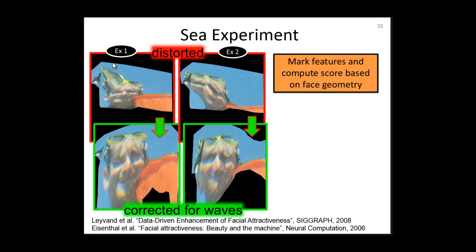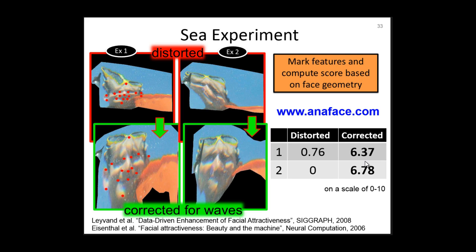Here are two results. Notice how the water mask is corrected here. You can judge by yourself which one is better looking. There are algorithms that can give you a beauty score based on the geometry of your face. There is also a website called Anaface where you can upload your image and get an attractiveness score based on face geometry by marking centered metric features.